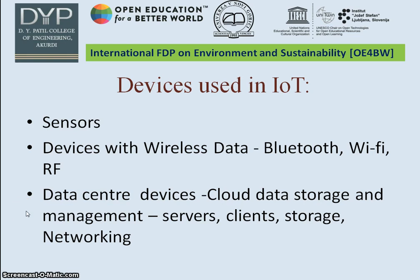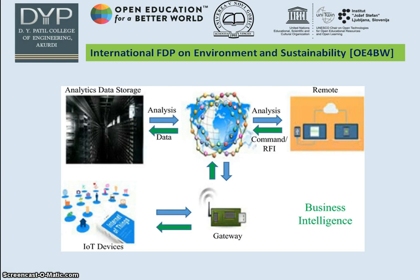This slide represents different devices used in IoT — basically sensors, devices with wireless data technologies such as Bluetooth, Wi-Fi, and radio frequency, and data center devices including cloud data storage and management devices such as servers, clients, storage devices, and network devices. From this we can identify that many electronic devices are involved in an IoT application. The diagram representing the flow of any IoT application shows that each phase involves some electronic device, so identifying the power consumption of an entire IoT application would take a lot of time — almost a thesis could be written on it.